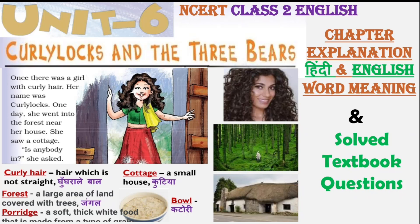Hello children, good morning! Welcome to Mint Talk India. Today in this video we are going to read a very interesting story from your NCERT Class 2 English textbook Marigold, Unit Number 6 - Curly Locks and the Three Bears. This story is about a little girl who one day goes into the forest near her home. To find out what she sees there, let's read the story.